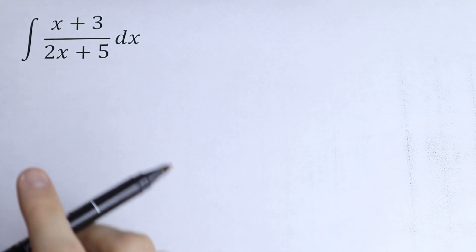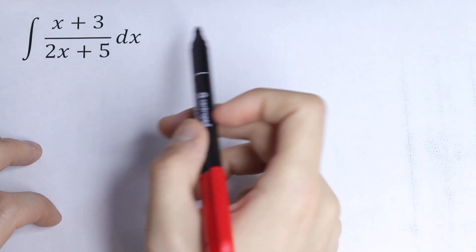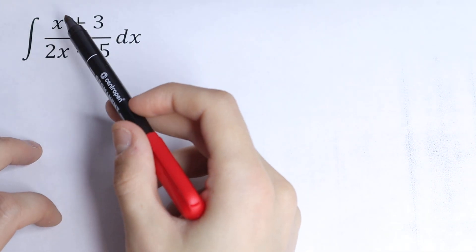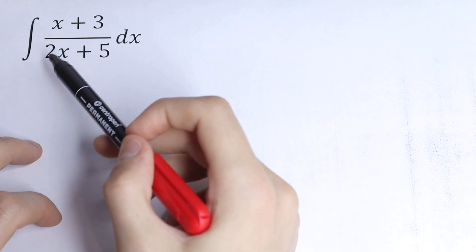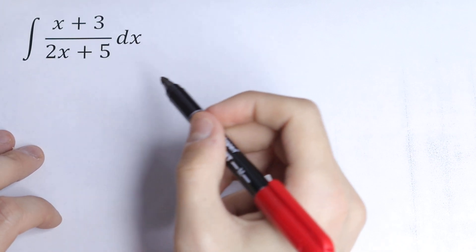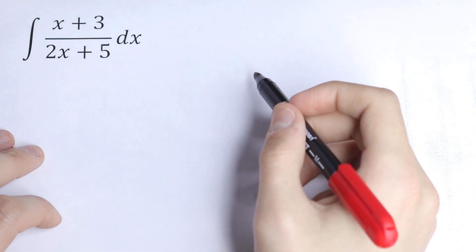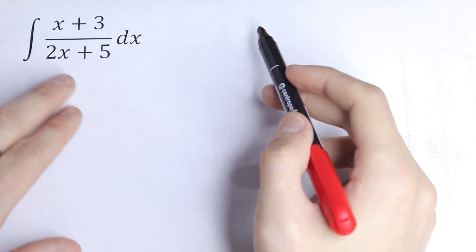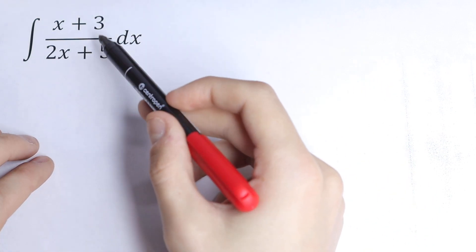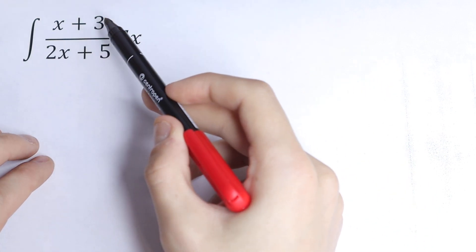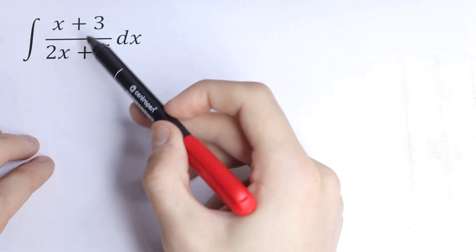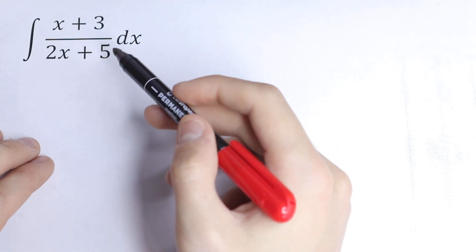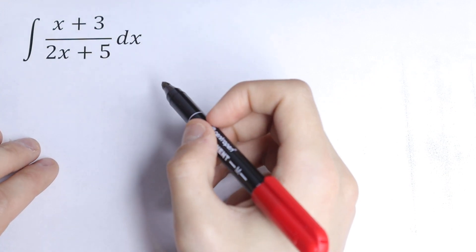Hello everyone, welcome back to higher mathematics. Here we have an interesting indefinite integral of the function (x + 3) over (2x + 5). This integral is really hard because we have x + 3 in our numerator and 2x + 5 in our denominator, so this is not the table case.